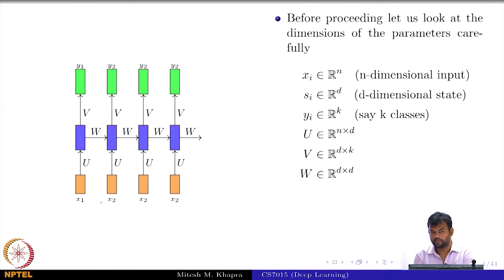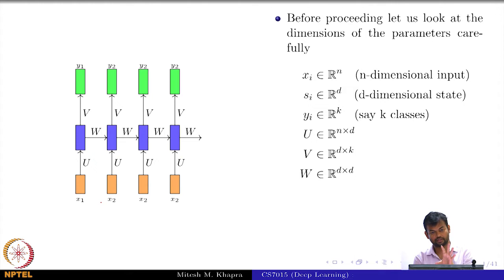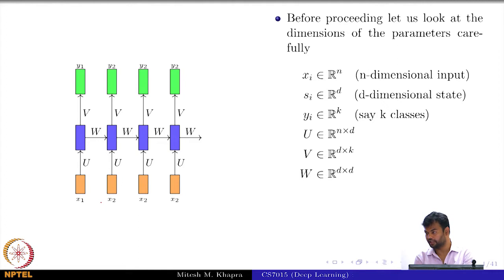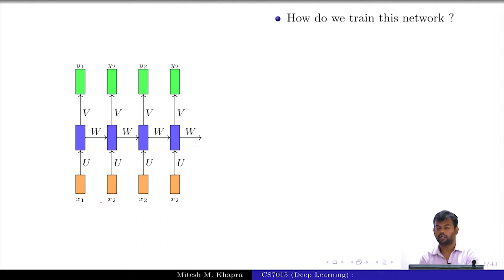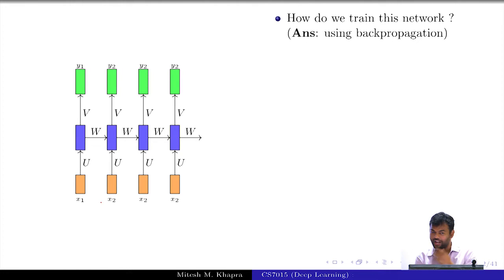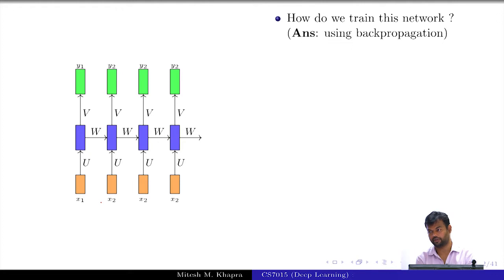Why am I talking about these dimensions? Whenever we talk about gradients — partial derivatives or gradients — we need to know the size of the parameter with respect to which we are taking the gradient, because that determines the size of the gradient matrix. That is why I am asking you to focus on these. Now, how do we train this network? Back propagation. But why do I have a module if I am only going to tell you about back propagation? Do you see any problem? Why cannot you just apply the standard back propagation?